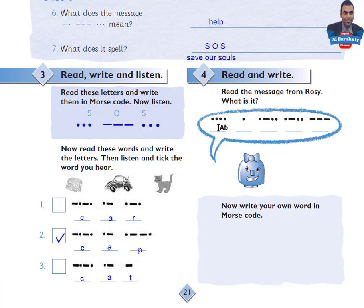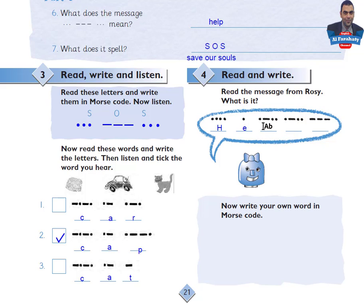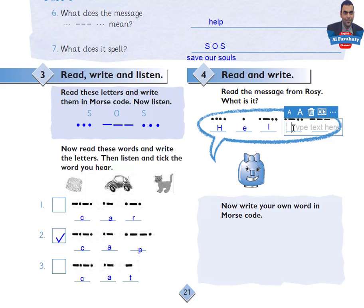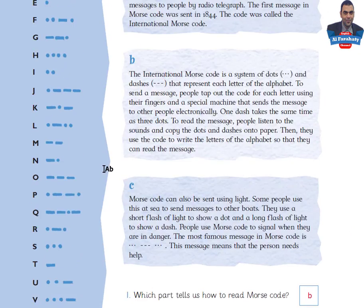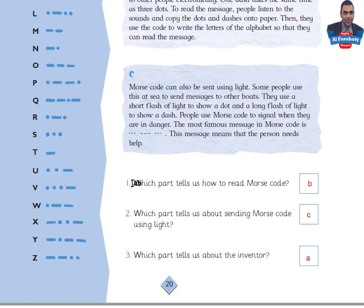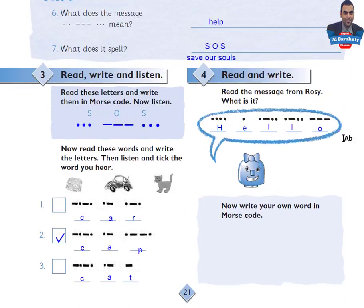Four dots represent H. One dot represents E. Dot dash dot dot — L. The same letter L again. And three dashes — O. So the word is HELLO. Now write your own word in Morse code. Try to use this code in order to write your own message. By this we've achieved the aims of this lesson.